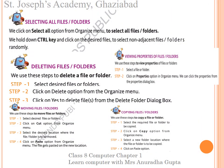Next, learn how to select all files or folders. To select all files or folders, click on Select All option from Organize menu. To select non-adjacent files or folders randomly, hold down Ctrl key and click on the desired files.